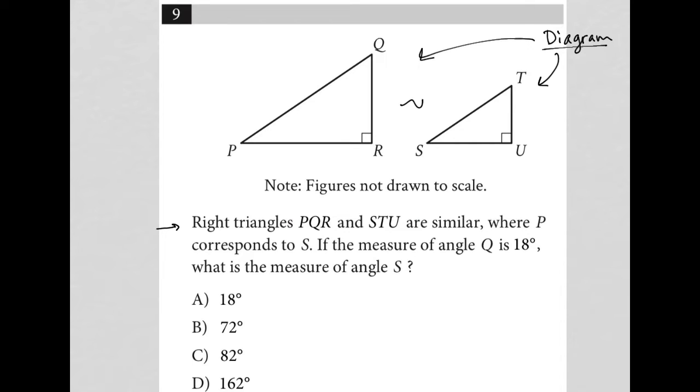Okay, so if they're similar, what does that mean? That means that angle P is equal to angle S, and that angle Q is equal to angle T. And we already knew that angle R and U were both 90 degree angles, so we know they're equal.